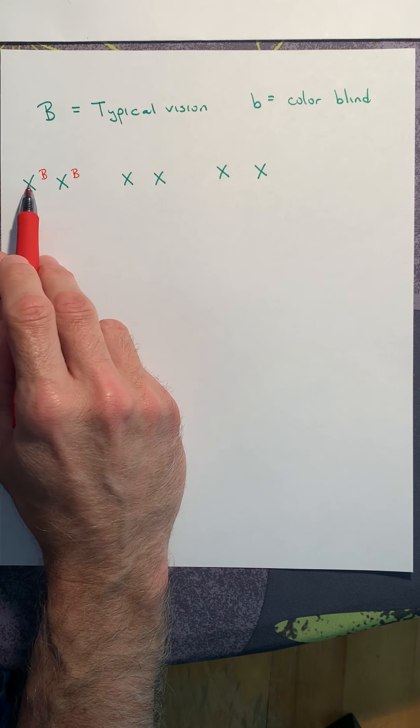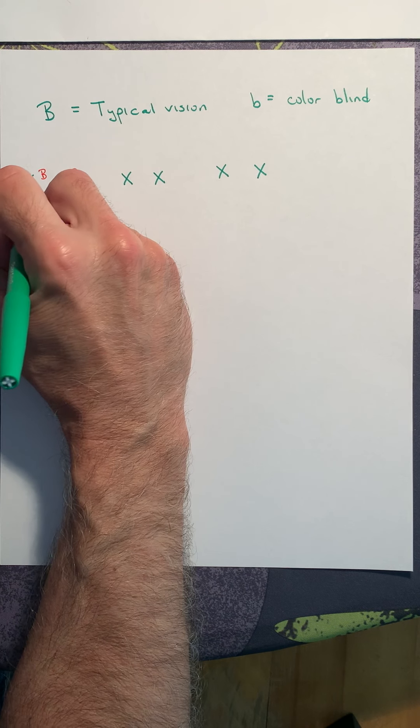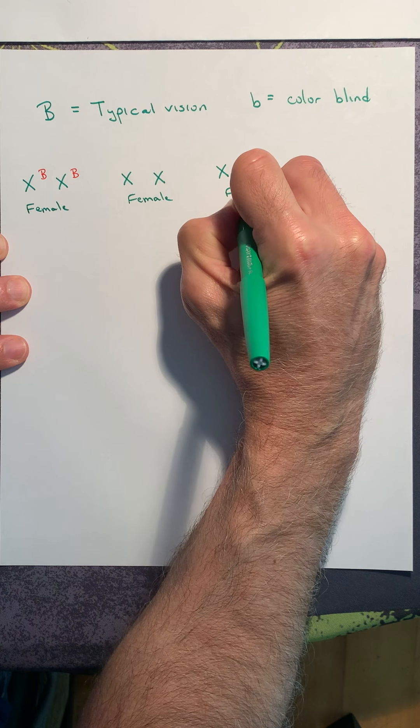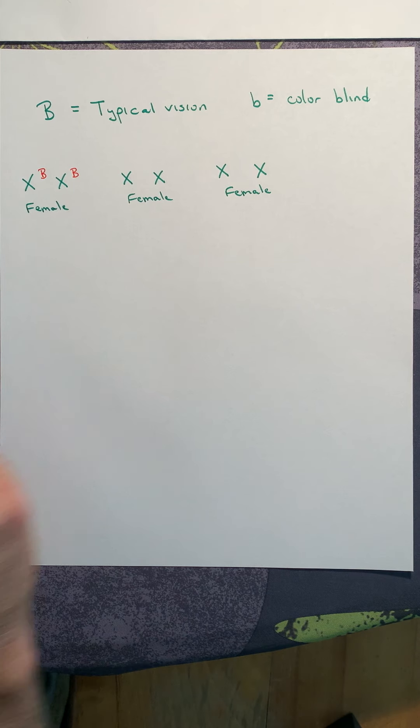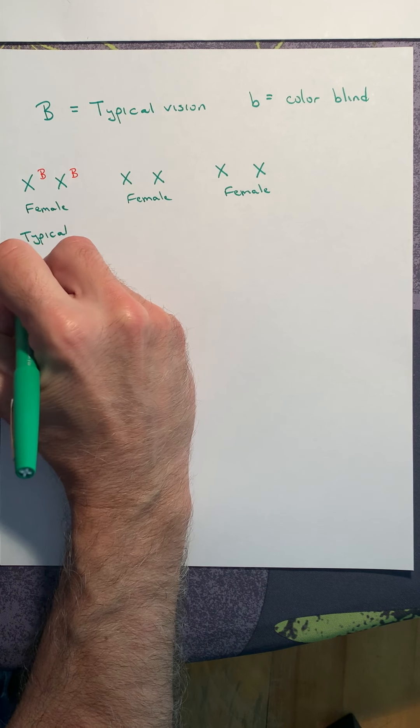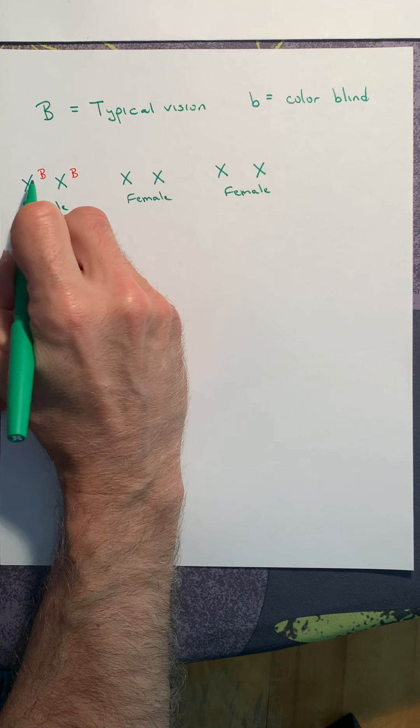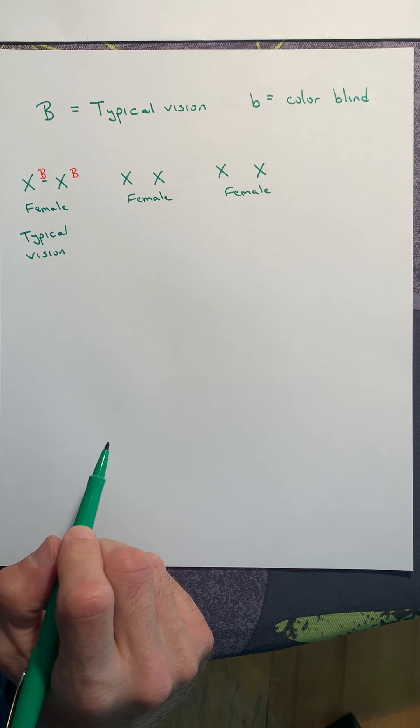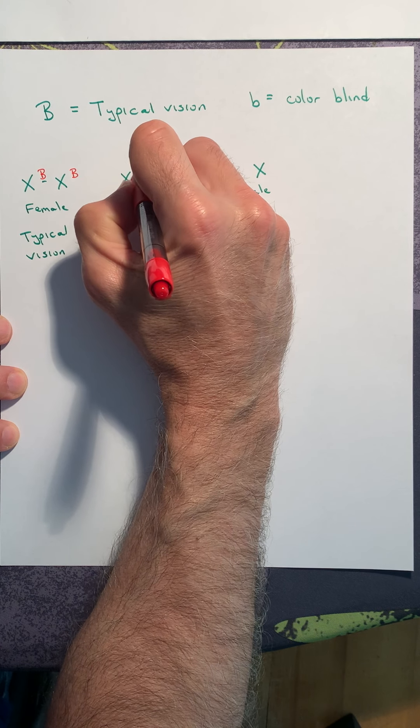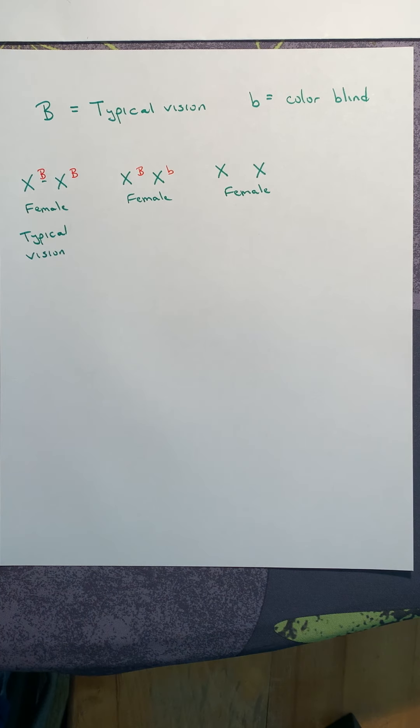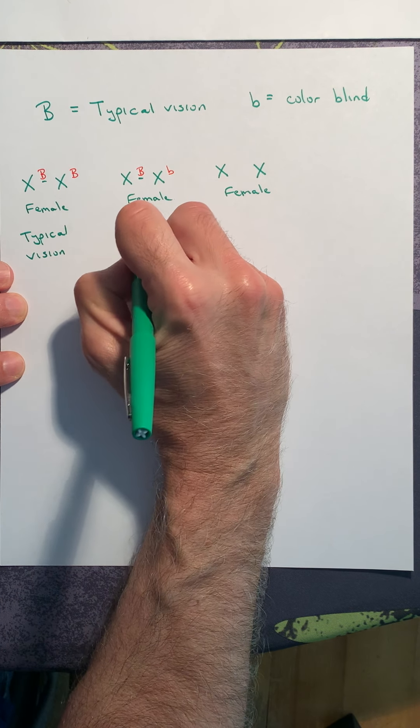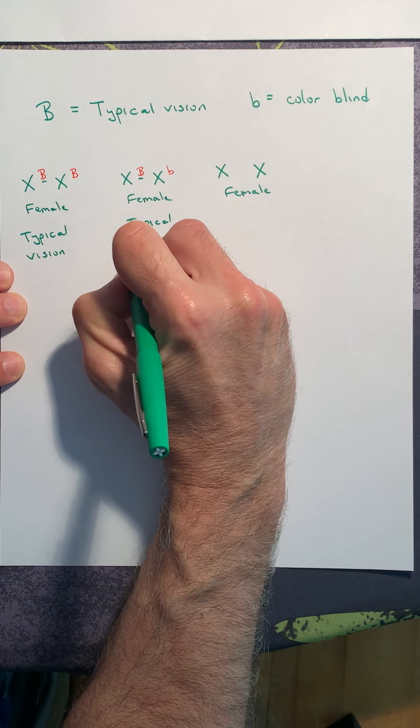So she is X big B, X big B. Well, first of all, she's female, as are these other two. So these three are all female. But since she's big B, big B, she has typical vision. Of course, she has typical vision. She carries and expresses the dominant allele. Well, what else could she be? Well, she could be big B, little B. She still carries and expresses the dominant B. So she still has typical vision.